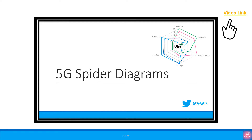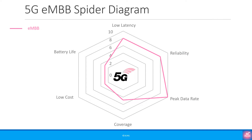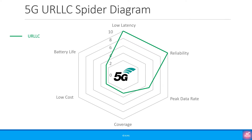We are going to look at some spider diagrams to help understand this feature better. We produced a video on spider diagrams earlier, so if you are unfamiliar, please check out that tutorial — the link is in the top right corner. For Enhanced Mobile Broadband, or eMBB, the emphasis is on peak data rates with reasonable low latency and reasonable high reliability. For URLLC, there is a very high emphasis on both low latency and high reliability, with 5-nines reliability required, and 3GPP Release 16 targeting 6-nines.